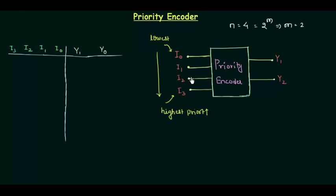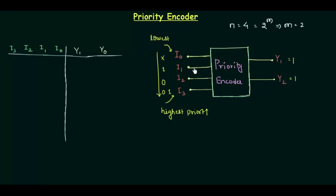By setting priority, we mean: if i3 is high (1), we don't have to check i0, i1, or i2. We simply set y1 equal to 1 and y0 equal to 1 because they reflect i3. Similarly, if i3 is 0, i2 is 0, and i1 is 1, we don't have to look at i0 at all — it is don't care for us. Whatever the value of i0, the output will still reflect i1, giving output 0, 1.